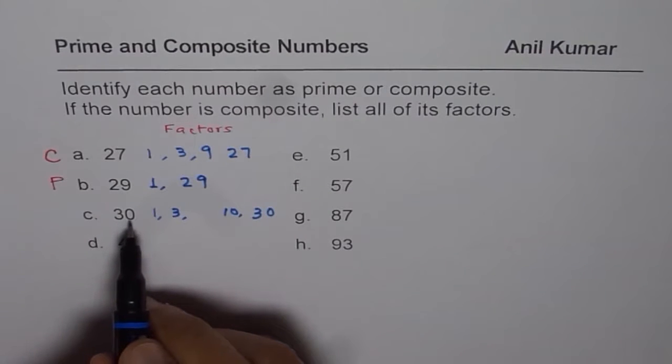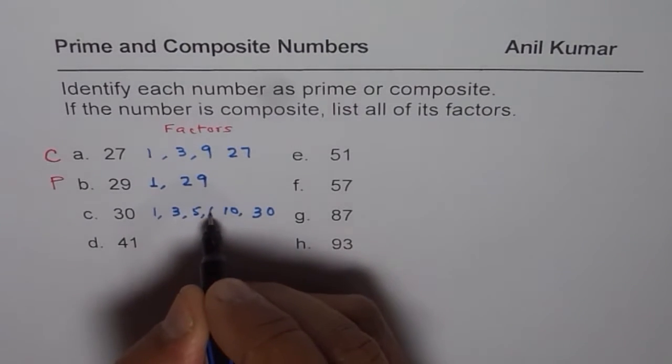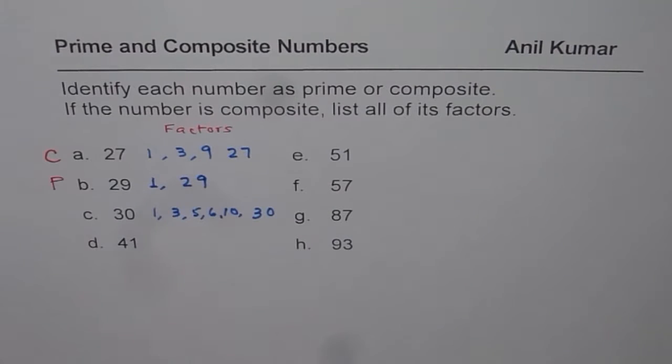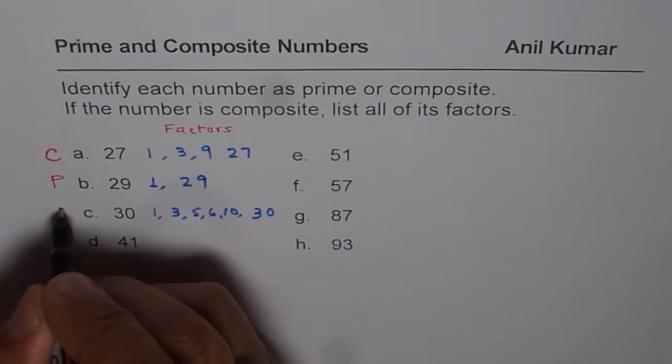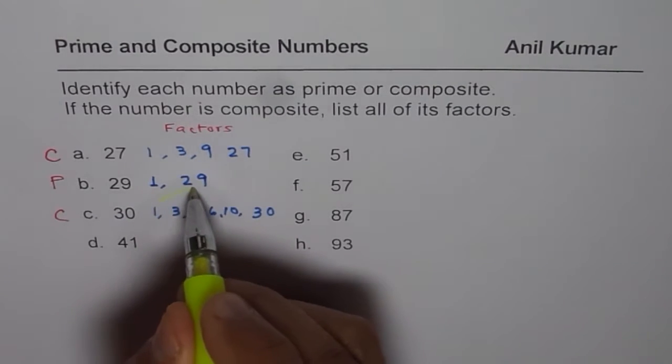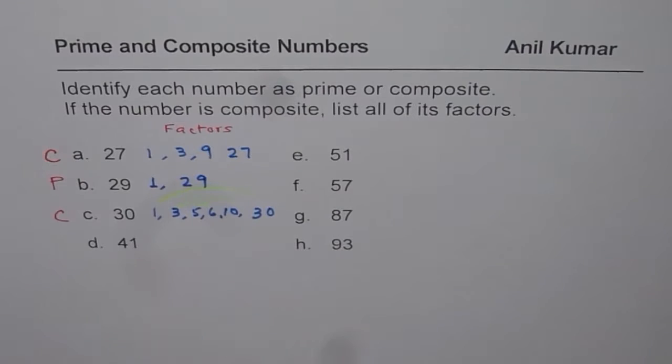And since it is ending with 0, you could also divide by 5. So 5 times 6 is also a factor. So it has so many factors. You see how I'm writing the factors of a number, kind of a rainbow formation. So 1 times 30, 3 times 10, 5 times 6. So these are all the factors of 30.